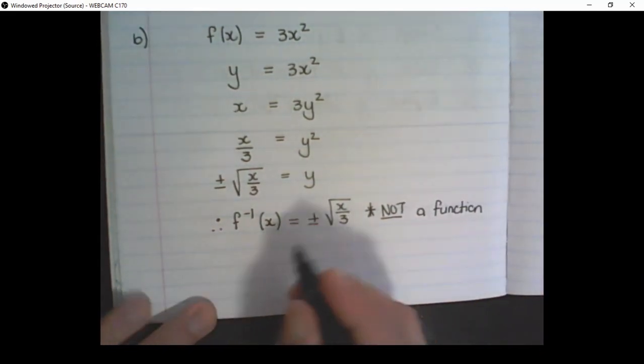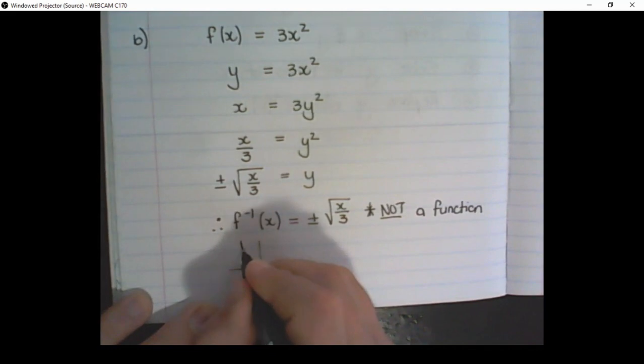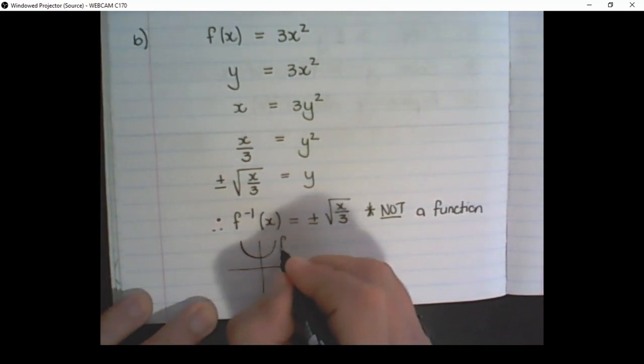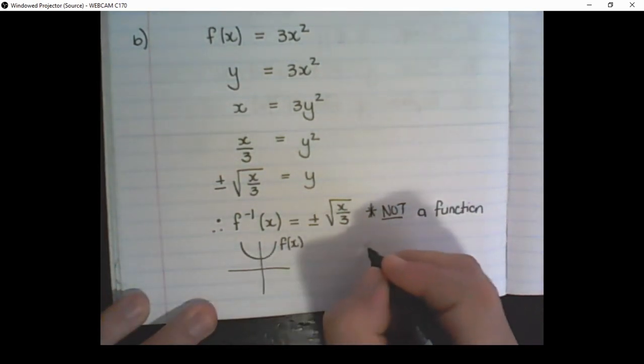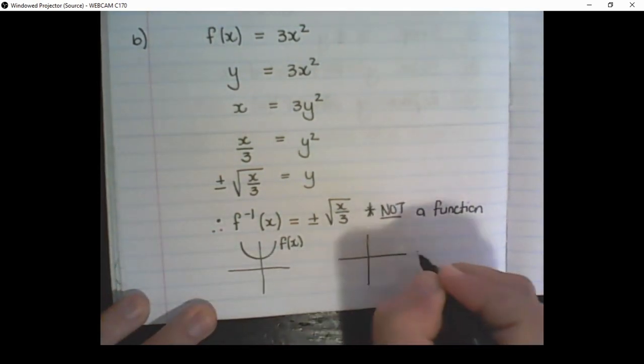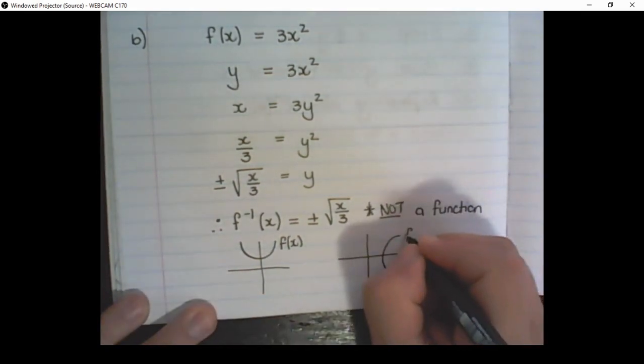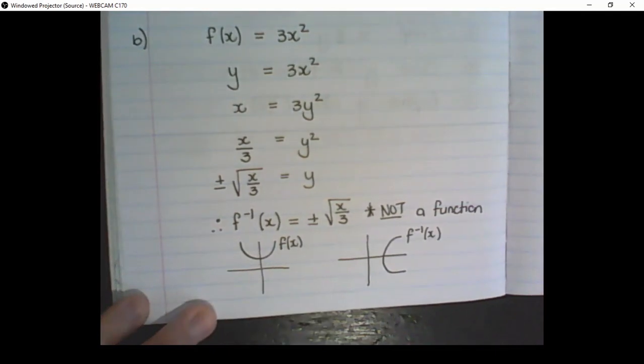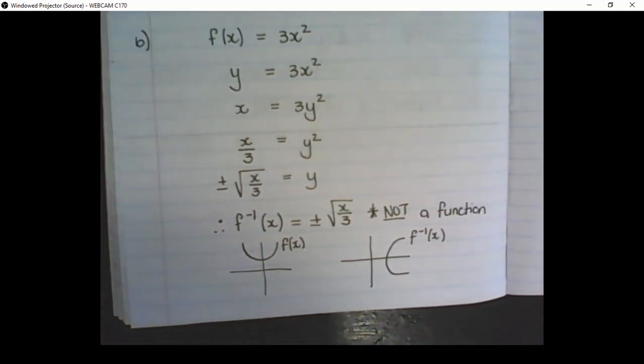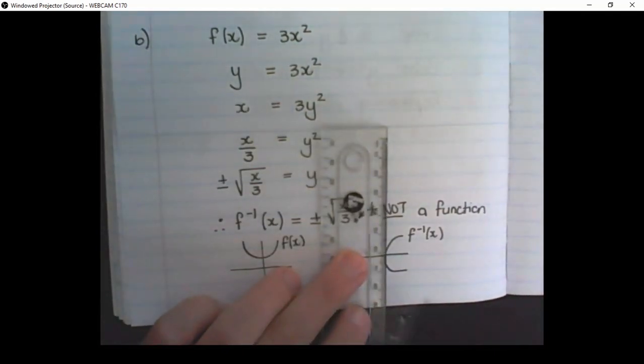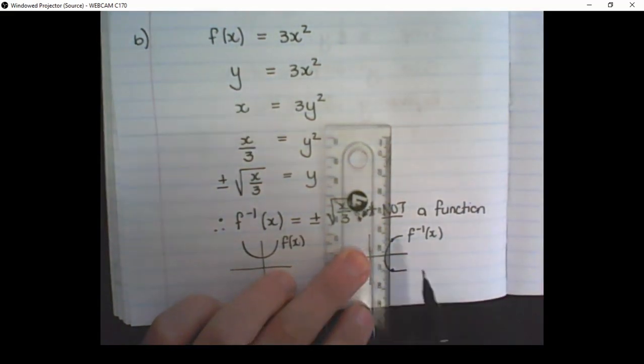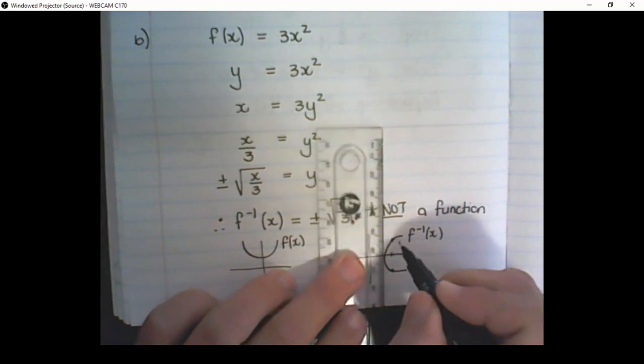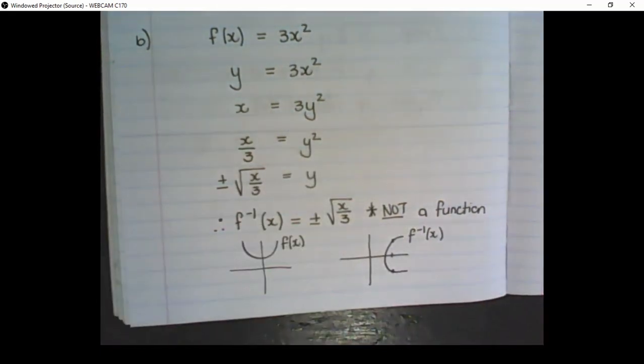To show you graphically, this would be a rough sketch of the function. But the inverse of the function, if I were to sketch it, would look like that. It's a parabola on its side. And if I do the vertical line test, it cuts through at two places. Meaning, that value of x will have two values in y. Therefore, it is not a function.